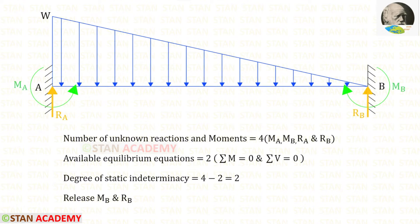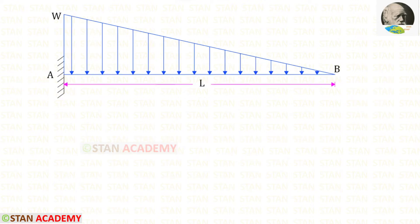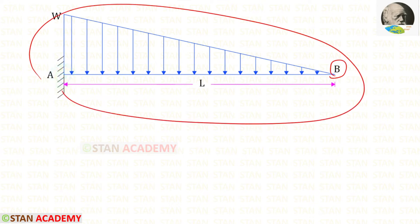We know that in this beam the degree of static indeterminacy is two. Let us remove MB and RB. You can see that from point B I have removed RB and MB, so point B becomes a free end. Previously it was a fixed beam but now it is a cantilever beam.